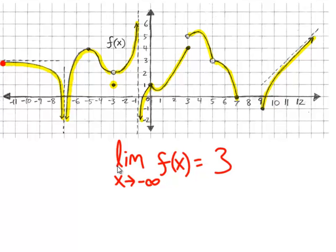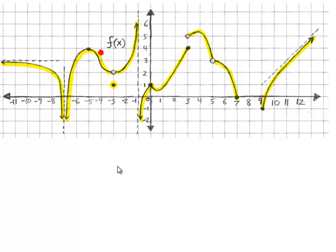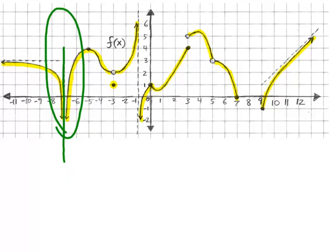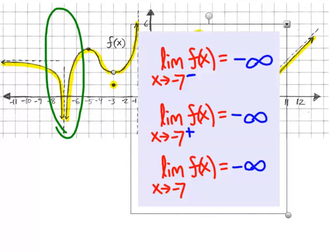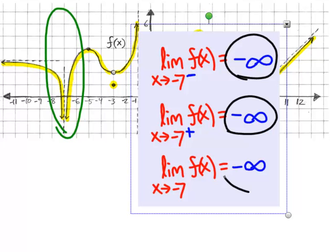We'll tackle that algebraically on a later date, but that's not our focus today. Today we're looking at what happens where x approaches some finite number — like negative 7 — and the y value approaches positive or negative infinity. Please pause the video as needed and make sure you understand the implication of 'from the left,' 'from the right,' and nothing written at all. If that confuses you, go back and review the video on one-sided limits. When the left-hand and right-hand limits are the same, that is also the two-sided limit.